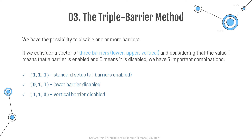One interesting characteristic of this method is the possibility of disabling one or more of the three barriers. Considering a vector with the three barriers — lower, upper, and vertical — where a value of 1 means enabled and 0 means disabled, there are three important combinations. The standard setup has all barriers enabled, meaning we want a profit but have a maximum tolerance for losses and a holding period. The second combination disables the lower barrier, meaning we exit after a number of bars unless stopped out. The last one disables the vertical barrier, meaning we take a profit as long as we are not stopped out — though this is an unrealistic setup, as it implies holding the position for as long as it takes.